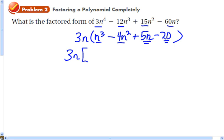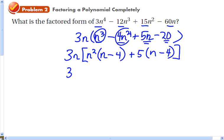The greatest common factor of n³ and 4n² is n². So let's factor out n², that will leave us n - 4. And then if I factor out a 5 out of the second two terms there, that will leave me with n - 4 also, which means I have a common factor. So I can write this as n² + 5 times the quantity n - 4.